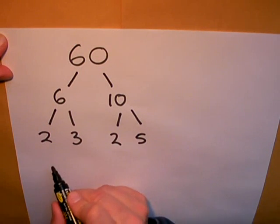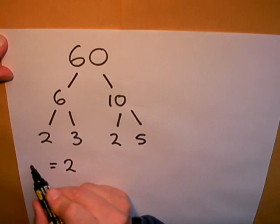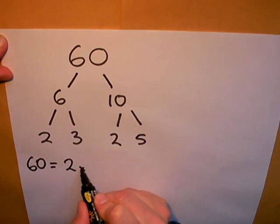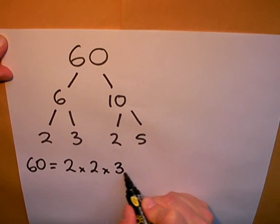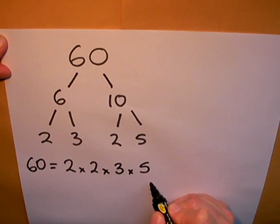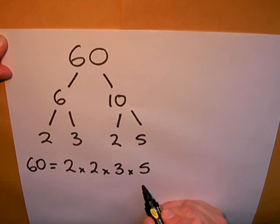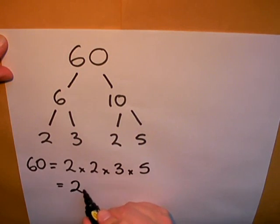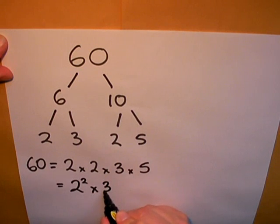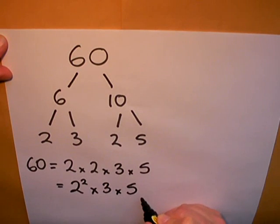Now the way I might express this answer is in order. 60 equals 2 multiplied by 2 multiplied by 3 multiplied by 5. These are all the prime factors. I can make that even shorter because I've got two 2s. I can say that it's 2 squared multiplied by 3 multiplied by 5.